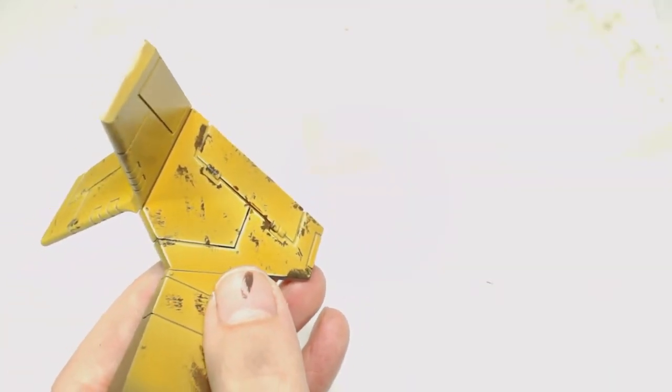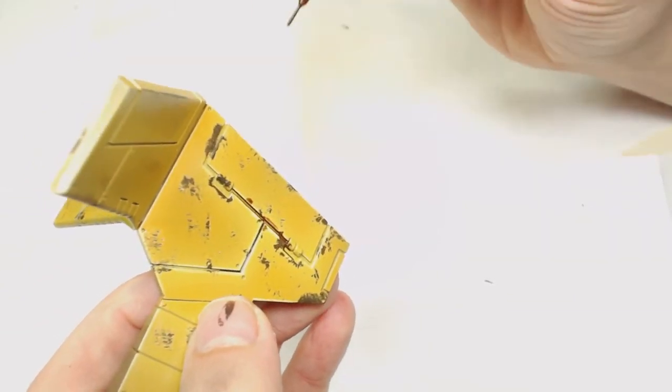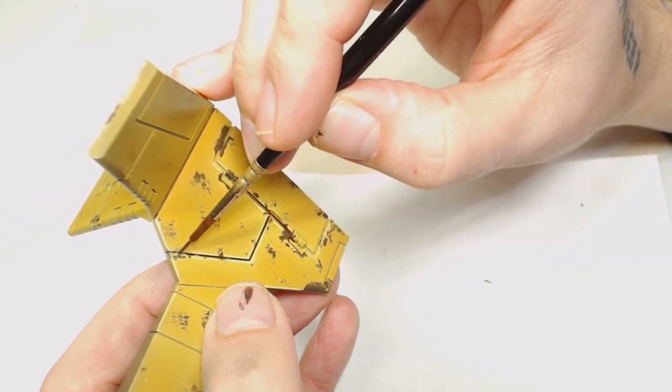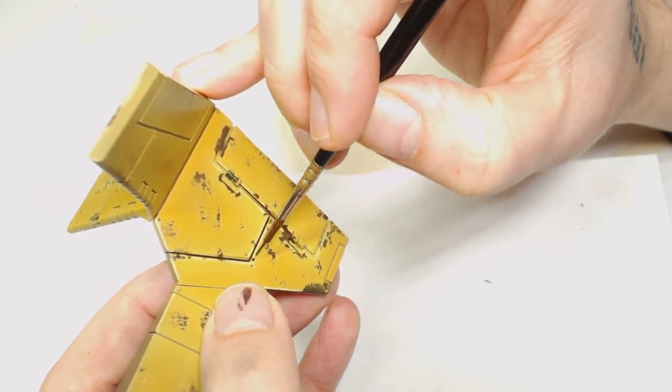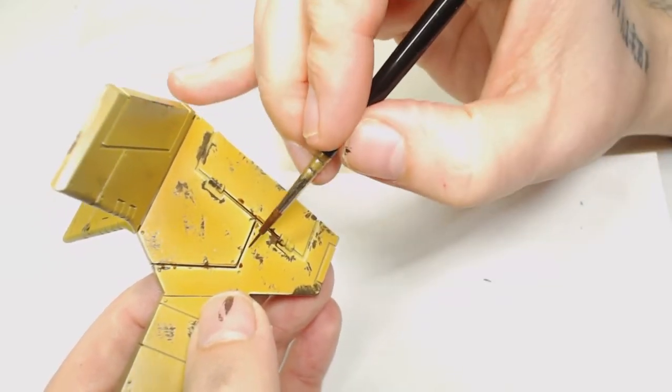Usually I'd do this with an oil wash, but you can do it with either depending on the effect you want to go for. I'm using my Windsor Newton Series 7, which I shouldn't be really because this stuff can damage your brushes. You should really use older brushes.